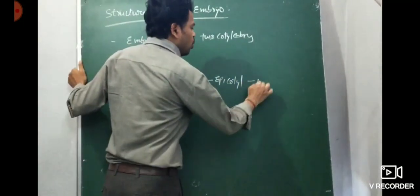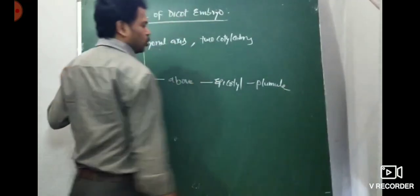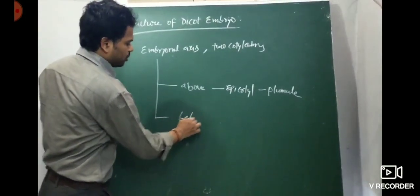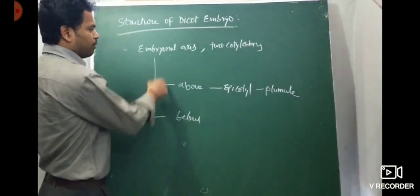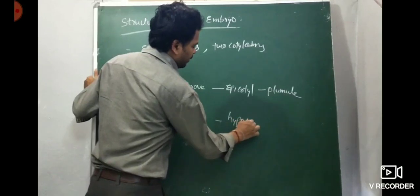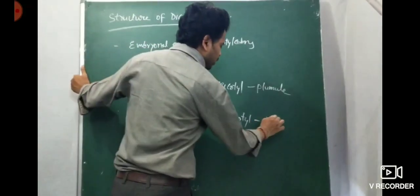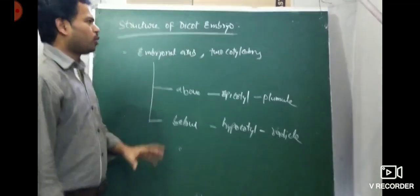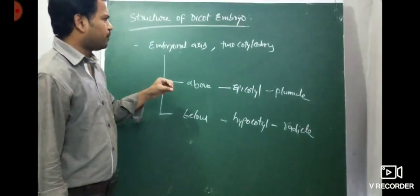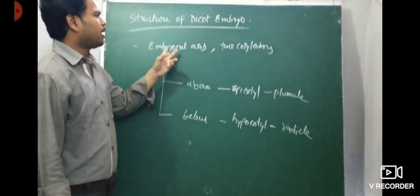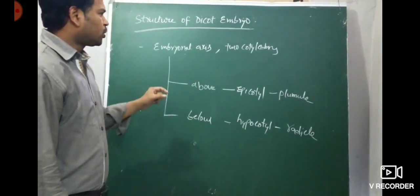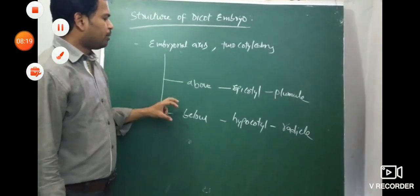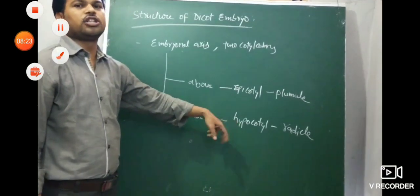The epicotyl turns into the plumule or shoot. The portion of the embryonal axis below the cotyledon is called the hypocotyl, which turns into the radicle or root tip. So the structure of the dicot embryo consists of embryonal axis with epicotyl and hypocotyl, and two cotyledons.